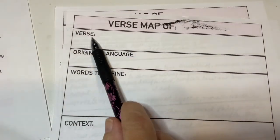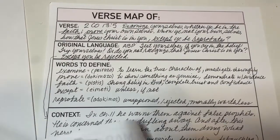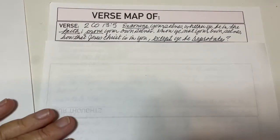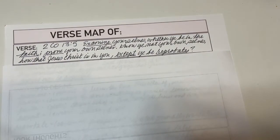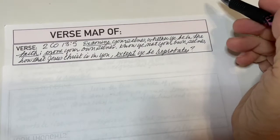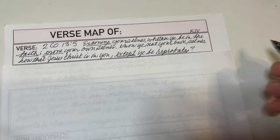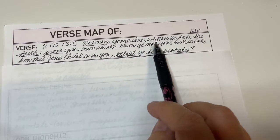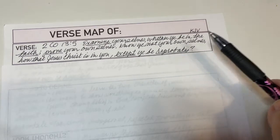This is the verse box right here, and I have written the verse out — it is 2nd Corinthians 13:5, and I think this is the King James Version. 2nd Corinthians 13:5: 'Examine yourselves whether ye be in the faith. Prove your own selves. Know ye not your own selves how that Jesus Christ is in you, except ye be reprobate.'